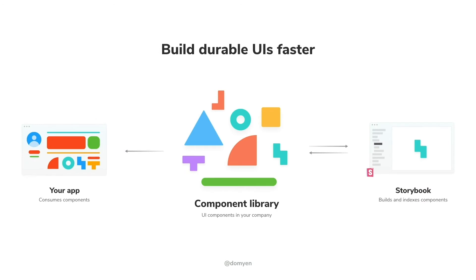It allows you to build durable UIs faster. As you can see here, your company usually has a component library, and your app consumes those components. Storybook helps you build and index those components.